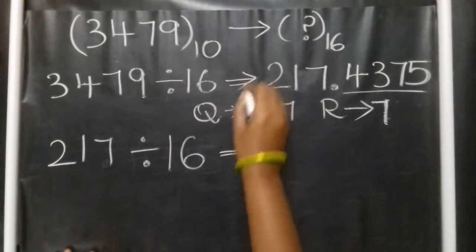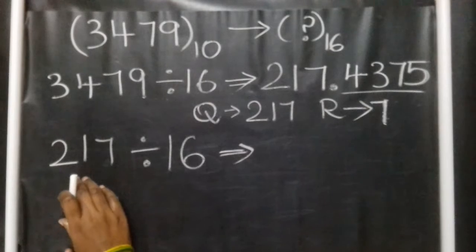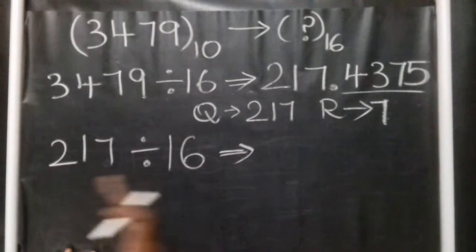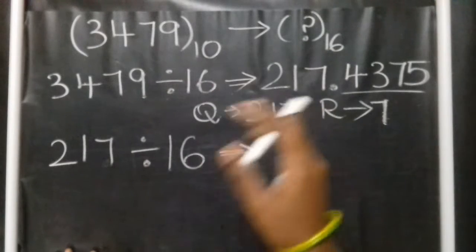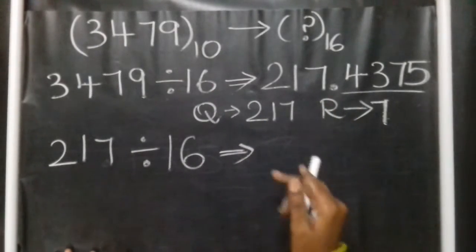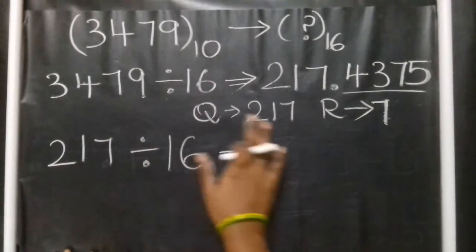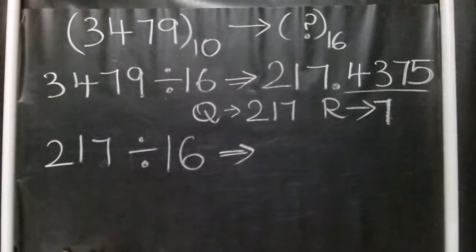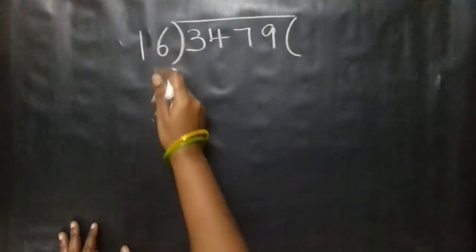Repeat with the quotient. Take 217, divide by 16. Using normal division or long division, there's a difference from calculator method. With normal division, you get quotient and remainder.